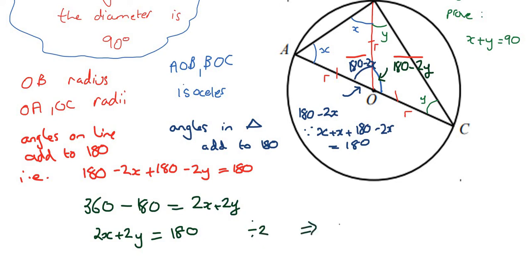And now hopefully you can see that we can divide by 2. So this tells us that X plus Y equals 180 divided by 2, which is 90. And if you recall, this is what we were trying to prove up here. So we're done. We have proved that this angle up the top is 90 degrees.